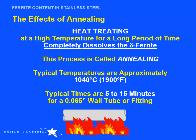Most ASTM and ASME product standards for welded stainless steel tube and pipe for critical or special service conditions require products to be solution anneal heat treated before being put into service. United Industries strictly adheres to these requirements. Solution annealing consists of heating products to a minimum critical temperature, holding at that temperature for a period of time known as the soak time, and then rapidly cooling to below a maximum critical temperature. For 300 series austenitic stainless steel, the critical temperatures are typically 1900 degrees Fahrenheit on heating and about 800 degrees Fahrenheit (425 degrees C) on cooling.